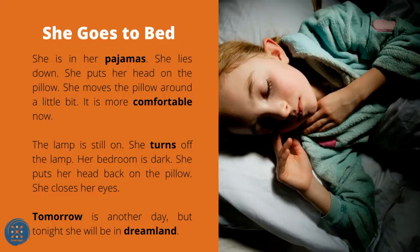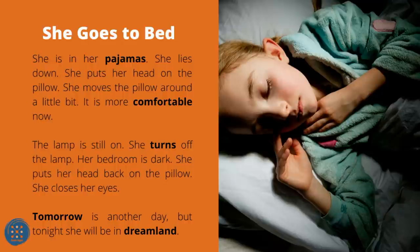She Goes to Bed. She is in her pajamas. She lies down and puts her head on the pillow. She moves the pillow around a little — it is more comfortable now. The lamp is still on. She turns off the lamp. Her bedroom is dark. She puts her head back on the pillow and closes her eyes. Tomorrow is another day, but tonight she will be in dreamland.